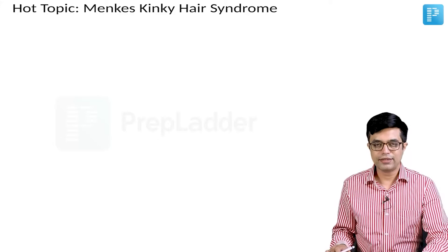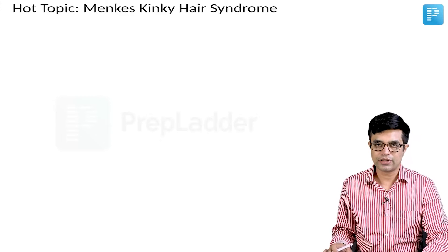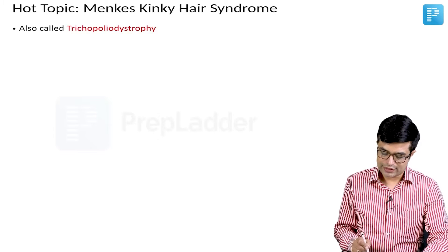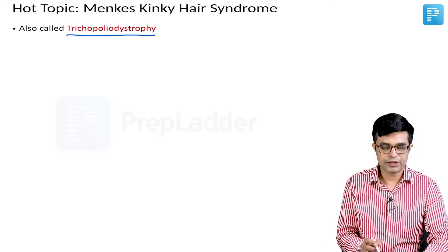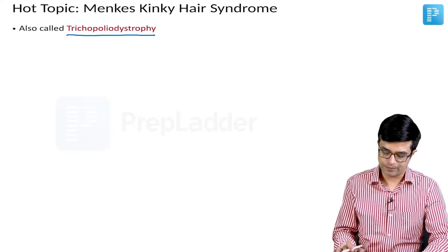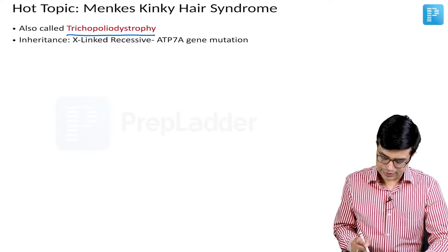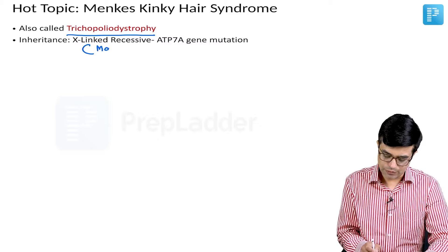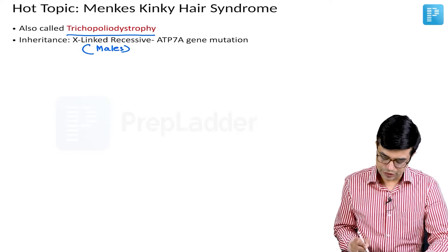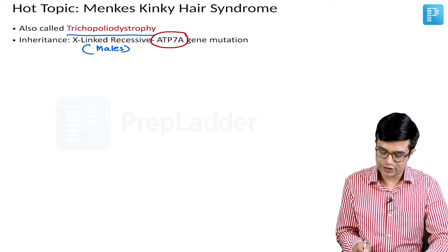The next topic is Menkes Kinky Hair Syndrome, which is an inherited disorder related to copper metabolism. It is also called trichopoliodystrophy, which is the alternative name for this condition. Inheritance-wise it shows X-linked recessive inheritance, so it is significantly more common in males, and the gene mutated here is ATP7A gene mutation.